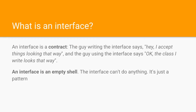First things first, what is an interface? An interface is like a contract. The guy writing the interface says: I accept things looking that way — your classes should have this and that. And the guy using the interface says: okay, the class I write will look that way. An interface, you must imagine, is like an empty shell. It can't do anything. It's just a pattern, just a blueprint for the classes that use the interface. That's important to know.